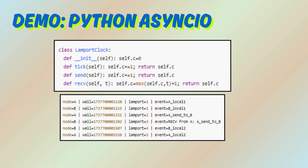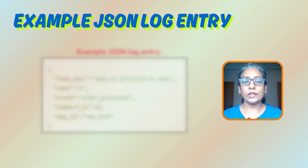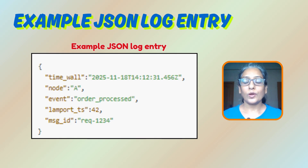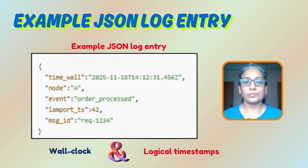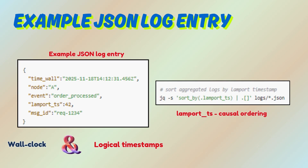Run it to see the same pattern: wall timestamps may invert, but logical timestamps preserve causal order. When logging distributed events, always include both wall clock and logical timestamps. You can see an example JSON log entry here. Sorting by Lamport timestamp gives you causal ordering for debugging, while wall time remains useful for latency and TTL calculations.